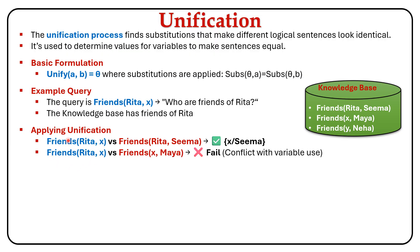In the second example, query friends(Rita, x) versus fact friends(x, Maya). The structure is different: in the query, Rita is friend with x, whereas in the fact, x is friend with Maya. Both terms share variable x, but x is used differently in each statement. To unify the two terms, x would have to refer to the same person in both cases, but this creates a conflict — it suggests the person who is friend with Rita is also friend with Maya, which is not a valid assumption. Hence, unification fails and leads to a conflict.